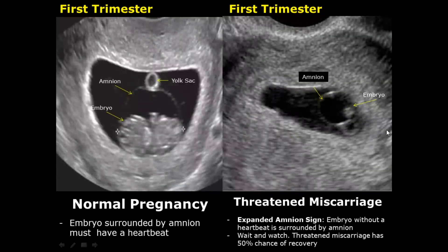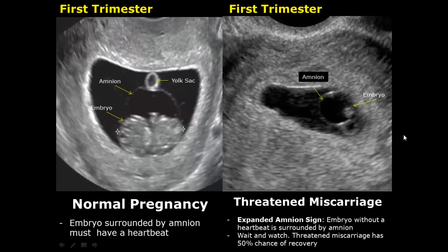An expanded amnion sign is another feature of threatened miscarriage, in which the embryo without a heartbeat is surrounded by amnion. Normally at this stage it has a heartbeat, but this feature is not a sure sign of a failed pregnancy. Just as a threatened miscarriage is not a sure sign of a failed pregnancy — it has a 50% chance of recovery — we must wait, watch, and evaluate further on serial scans.